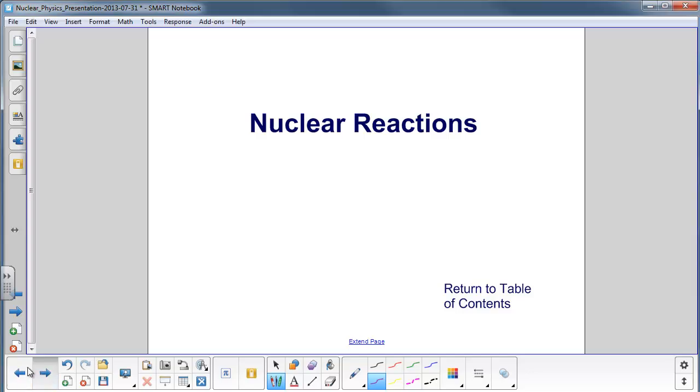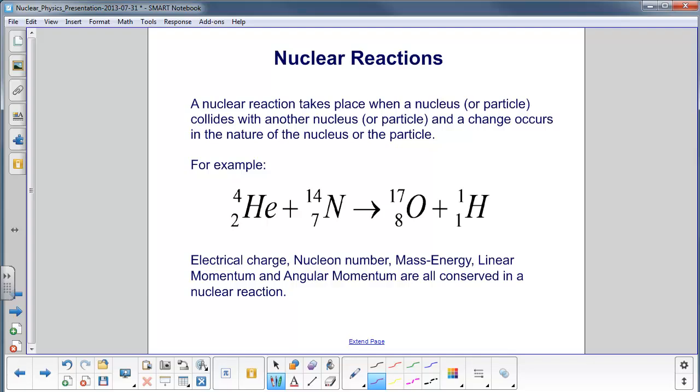Nuclear reactions. A nuclear reaction takes place when a nucleus or particle collides with another nucleus and a change occurs in the nature of that nucleus. For example,